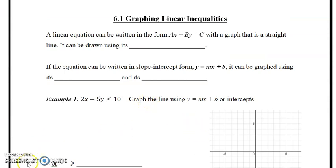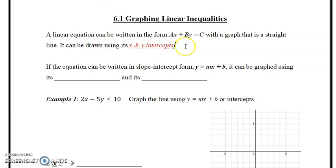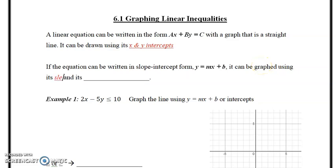Today we start Section 6.1: Graphing Linear Inequalities. Recall that equations in the form ax + by = c graph as a straight line, solved using x- and y-intercepts. Another common form is slope-intercept form, y = mx + b, which we can use with the slope and y-intercept. If you're unsure about this, the upcoming example will walk through it step by step.